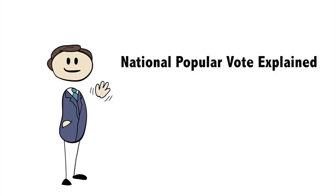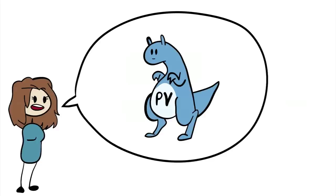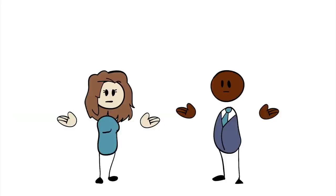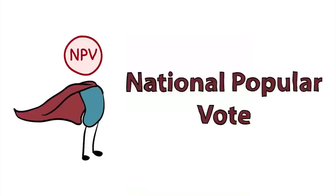Hello, and welcome to The National Popular Vote Explained, by me, PopVote. Some people love the electoral college, others prefer the popular vote, but most don't know about the third option — an option that fixes the problems with our current electoral system without abolishing the electoral college. It's called the National Popular Vote Bill, and it's only kind of what it sounds like.